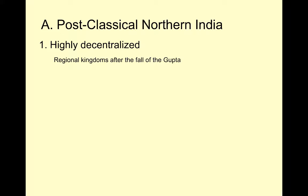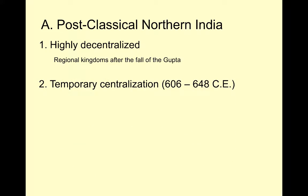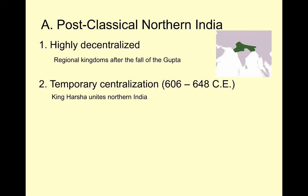Post-classical northern India. We're going to start around 600 CE. At the start of period 3, India is highly decentralized. After the fall of the Gupta Empire in period 2, India had reverted back to its normal state of affairs — very decentralized, ruled by local rajas or local kings. Until around 606, we see a new power rise up in northern India: King Harsha's empire. If South Asia becomes centralized under one empire, it's usually only northern India.